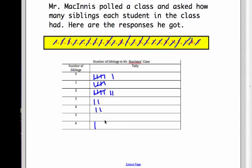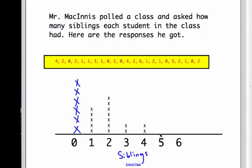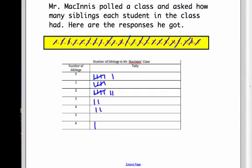Now right here is very much the wolf part of putting together the dot plot. If no people have five siblings, we don't write any X's above the five. And finally, one person has six siblings.